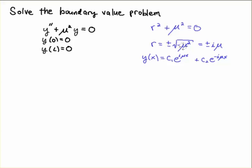When I plug that into the form of the solution for the second order ODE, I get an e to the i mu x and an e to the minus i mu x, and now you can see why you need to know Euler's formula to simplify that.